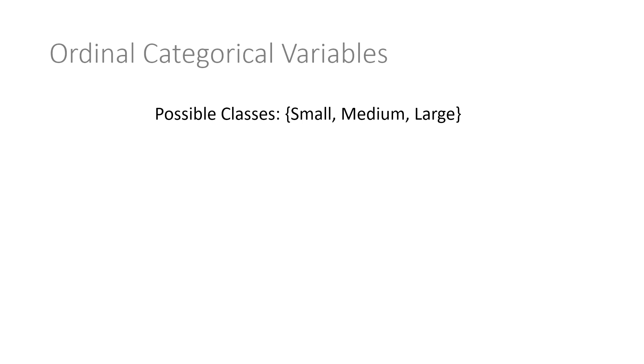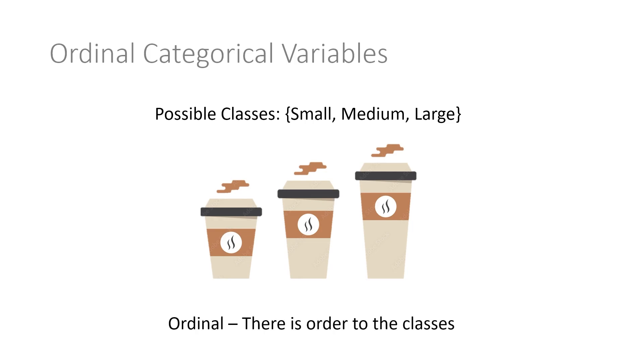So that's how we encode nominal categorical variables, but what about ordinal categorical variables, ones that do have an order? An example could be the possible classes of a variable were small, medium, and large, and maybe it was referring to the size of a coffee. It would have to be one of those three sizes. This is still categorical, however, it's ordinal. There is an obvious order to these classes. Medium is bigger than small and less than large, and large is bigger than both small and medium.